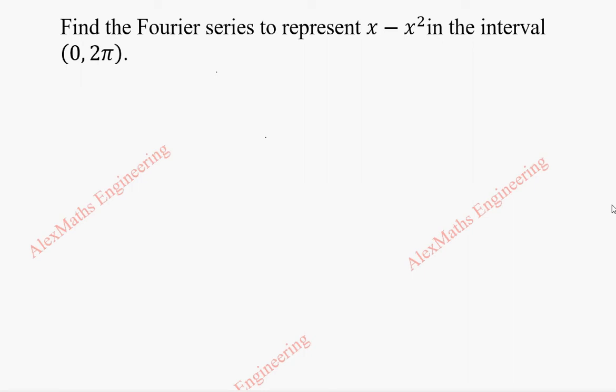Hi students, this is Alex here. In this video, we are going to find the Fourier series to represent the function f(x) = x minus x squared in the interval 0 to 2π.